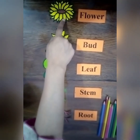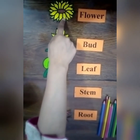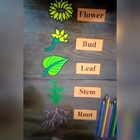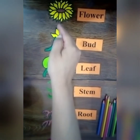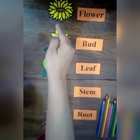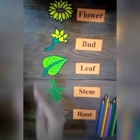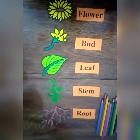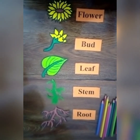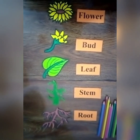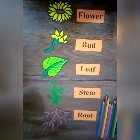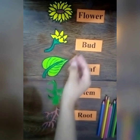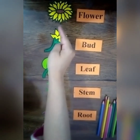Flowers are the colorful parts of plants which take part in reproduction. They make seeds and fruits. Because of their beautiful color, flowers attract insects for pollination.